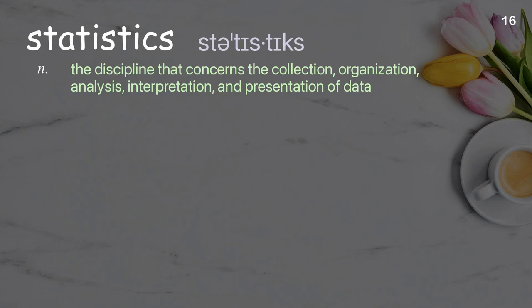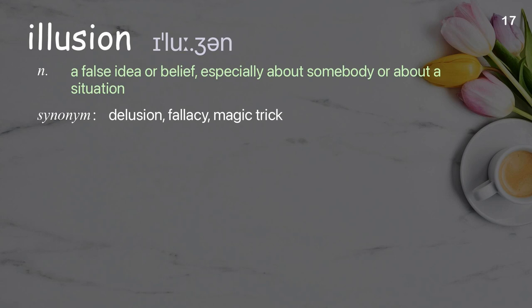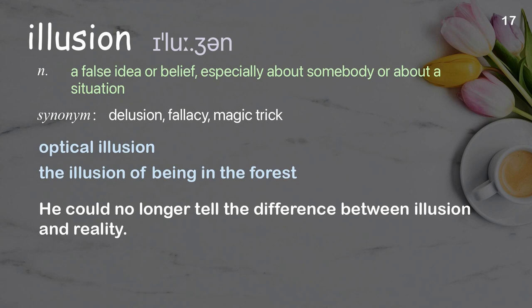Statistics: the discipline that concerns the collection, organization, analysis, interpretation, and presentation of data. Examples: statistics for cancer. Illusion: a false perception or deceptive appearance. Examples: optical illusion, illusion of being in a forest. He could no longer tell the difference between illusion and reality.